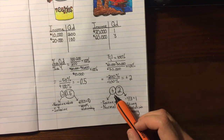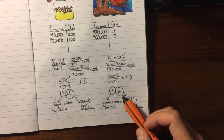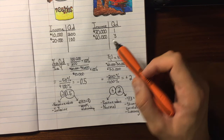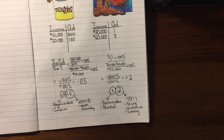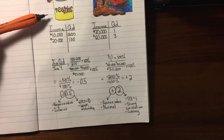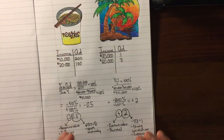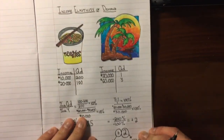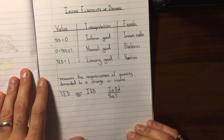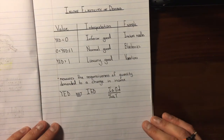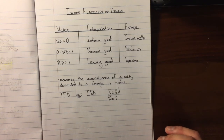First we check whether a good is normal or inferior by looking at the sign, then we look at the strength of the relationship. Here the relationship is quite strong, which makes logical sense — when income doubles, people are more likely to take more vacations. In the case of noodles, many college students consume instant noodles, but as they graduate and make more money they tend to consume less. So we have an example of an inferior good and a luxury good, and the values in the table match up as expected. Thanks for watching — if you have any questions, please leave a comment below.